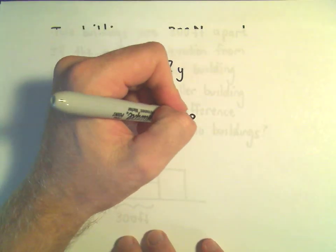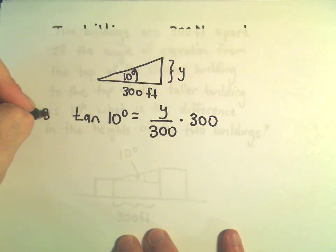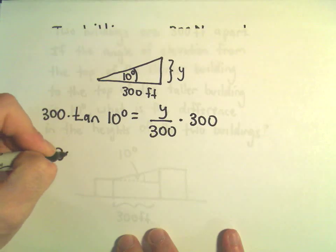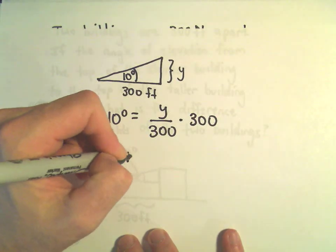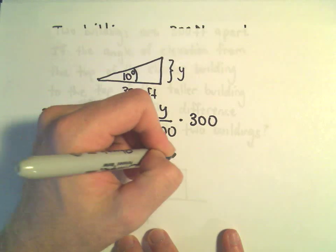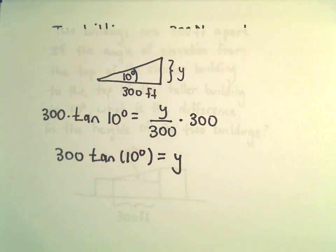So I'm just going to simply multiply both sides by 300. So I'll have 300 times tangent of 10 degrees. That's going to equal y.